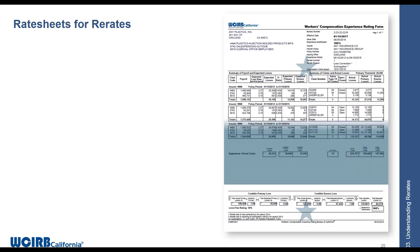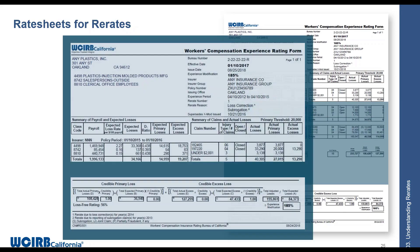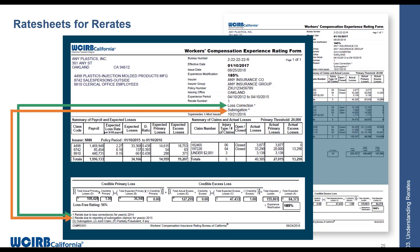Here are a couple of examples. In this case we have re-rate number one with two reasons: a loss correction and a subrogated claim. There's a little number one by 'loss correction.' Going down to the footnote, number one indicates the re-rate was due to a loss correction for year 2014. For the subrogation, there's a number two in the footnote indicating the re-rate was due to claims in policy year 2013.